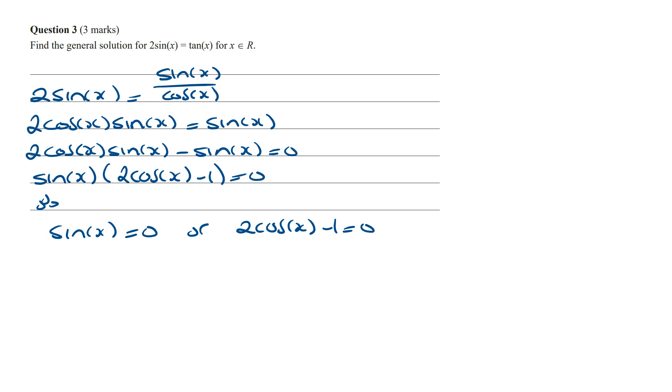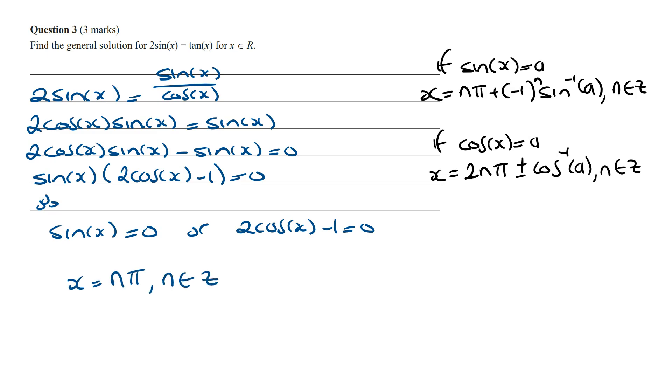To find the general solution of a sine function we can use this formula. And to work out the general solution of a cos function we need to use this formula. Now sine inverse of 0 is going to equal 0 and so therefore the general solution of sine of x is equal to 0 is going to be x is equal to n pi where n is an integer.